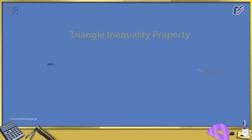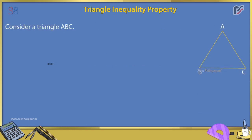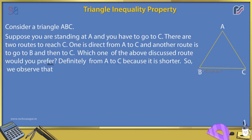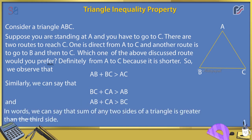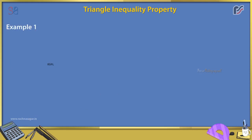Triangle inequality property. Consider triangle ABC. If you are at A and need to go to C, you can go directly (AC) or via B (AB + BC). The direct route is shorter, so AB + BC > AC. Similarly, BC + CA > AB and AB + CA > BC. In other words, the sum of any two sides of a triangle is greater than the third side.